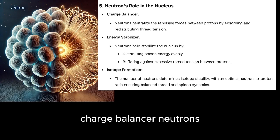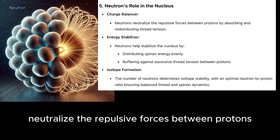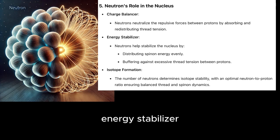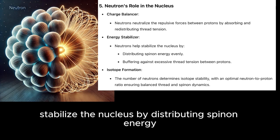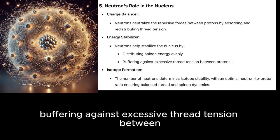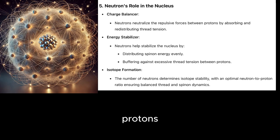Neutron's role in the nucleus: charge balancer. Neutrons neutralize the repulsive forces between protons by absorbing and redistributing thread tension. Energy stabilizer. Neutrons help stabilize the nucleus by distributing spinon energy evenly, buffering against excessive thread tension between protons.